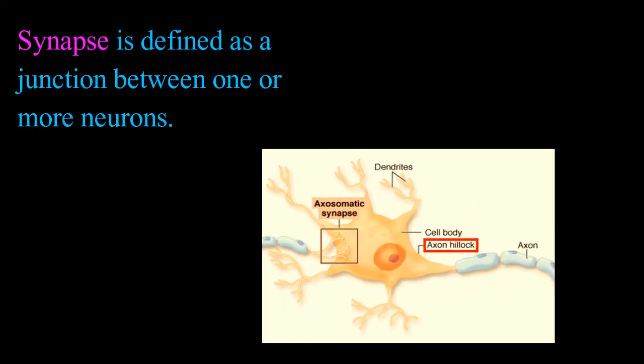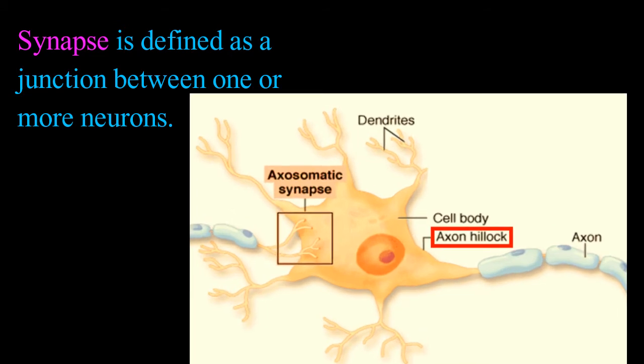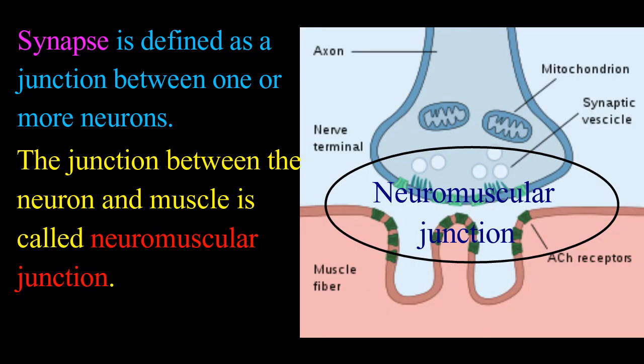Synapse is defined as a junction between one or more neurons. However, if the junction is present between the neuron and the muscle, it is called the neuromuscular junction.